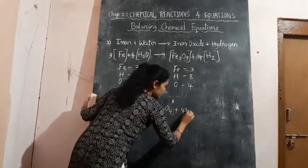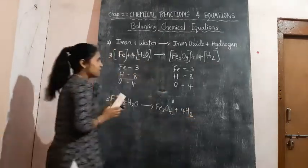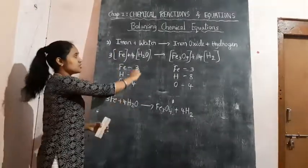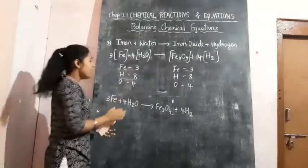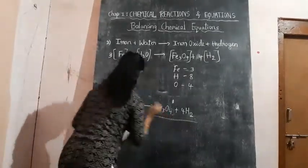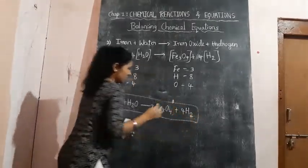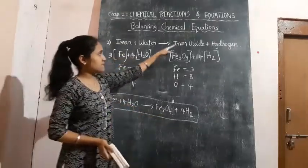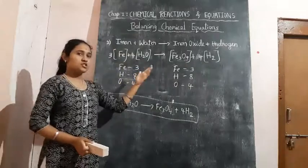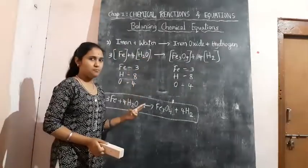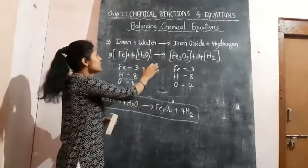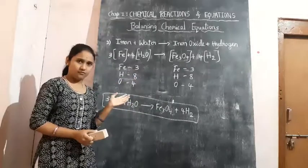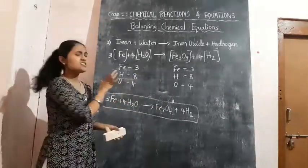When writing the final equation, you do not need to write those brackets — I mentioned at the start that brackets are just for the purpose of balancing and understanding. Our balanced chemical equation for iron plus water gives iron oxide plus hydrogen is: 3Fe + 4H₂O → Fe₃O₄ + 4H₂. There is no fixed formula or particular method for balancing equations — this is just a trial-and-error method.